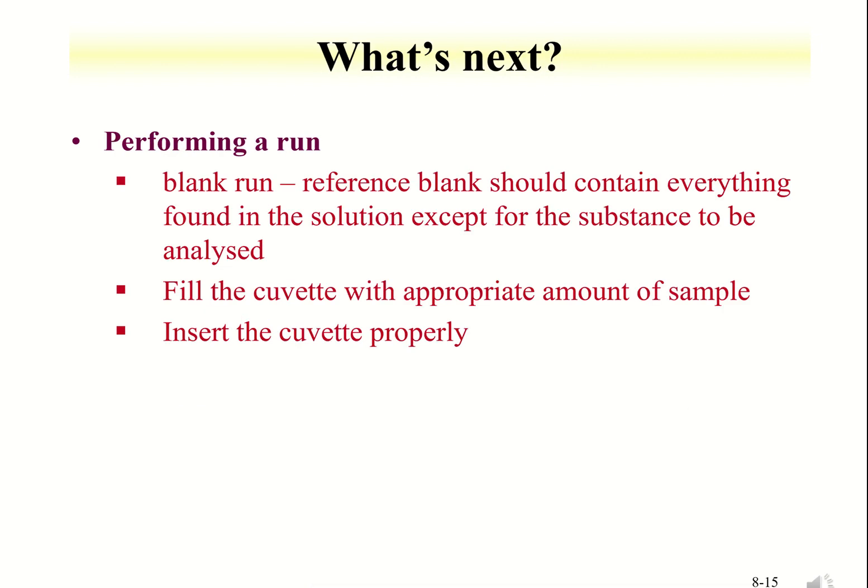To operate a UV spectrometer, we should first perform a blank run. A blank run is done with a cuvette filled with distilled water or solvent which is used to dissolve the sample. This is to ensure that all possible background noise that can contribute to the absorbance is eliminated prior to sample run. To perform a blank run, a clean and dry cuvette is filled with the solvent to three quarters of the cuvette and inserted into a slot with the clear side of the cuvette facing the light path.